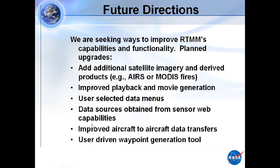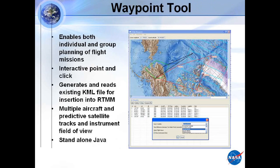I mentioned the interactive waypoint generation tool. Getting flight plan information into the real-time mission monitor has been a challenge over the past few experiments, but we've got a good Java tool that works well with the real-time mission monitor. It's just point-and-click. It has all the information about the aircraft flight speeds, you can drag waypoints, and you can incorporate satellite orbit predictions — so you can more easily plan where the airplane and the satellites will be. Then you feed that directly into the real-time mission monitor.